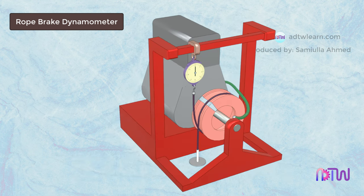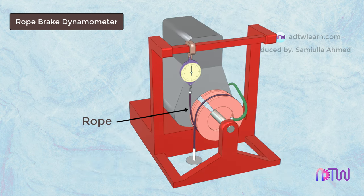In this rope brake dynamometer, there is a rope that is used for measuring the power of the engine.